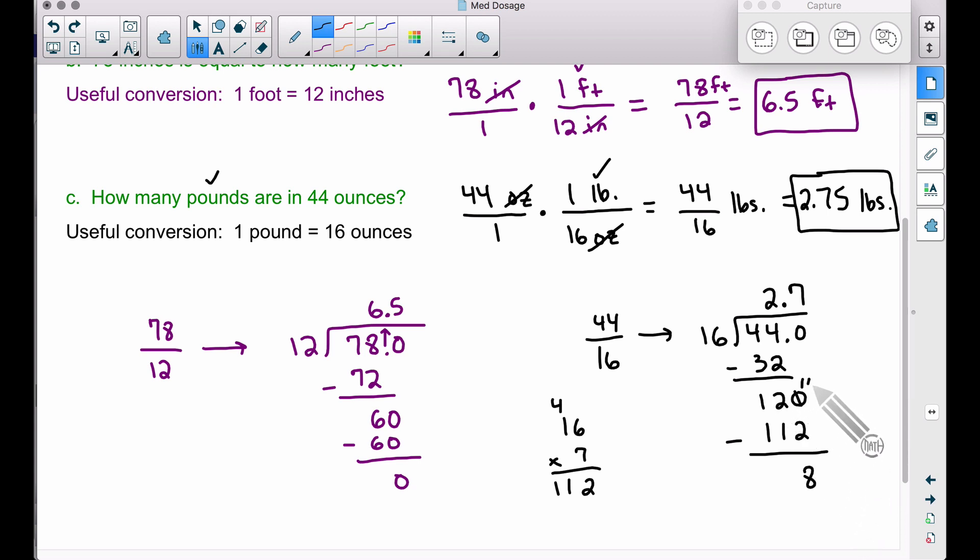Let's bring down one more zero and hope we get a remainder of zero eventually. Lucky for us, we do. 16 goes into 80 five times. 5 times 16 is 80, so we have a remainder of zero. Sometimes you'll never get a remainder of zero, but we do have one now. As you can see, 2.75 matches that problem perfectly.